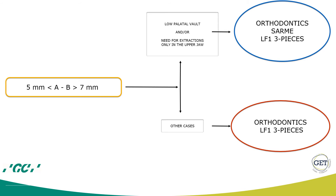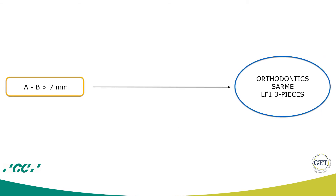Another exception is when you need to extract only in the upper arch. If you have a Class 3 patient with no crowding in the lower arch but crowding in the upper, you may want to perform a SARPE when the discrepancy is between 5 and 7 mm, because this will allow you to resolve the crowding without having to extract. This can shorten treatment time and facilitate matching the arch length of the upper and lower. If the discrepancy is higher than 7 mm, studies show that for an average surgeon it will be difficult to achieve stable expansion, so it is best to do a surgically assisted expansion followed by a LeFort I, most likely also in three pieces.